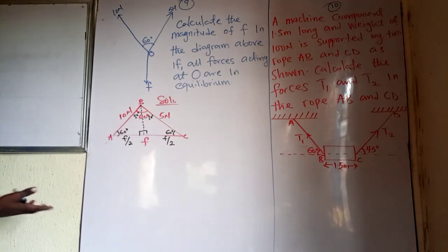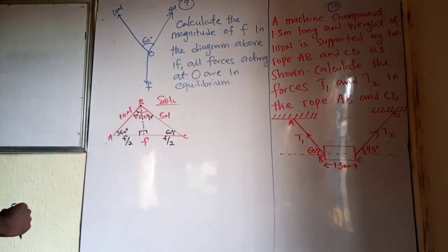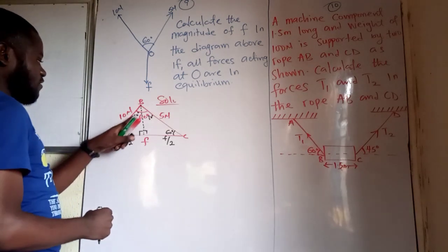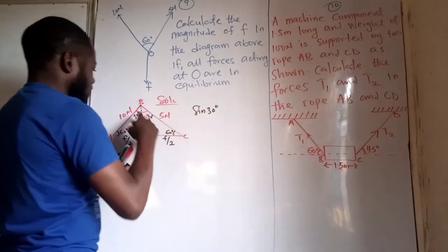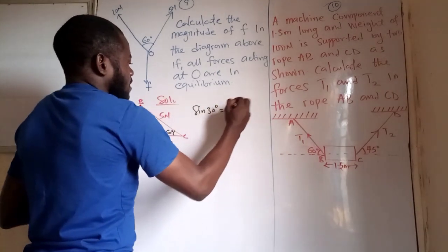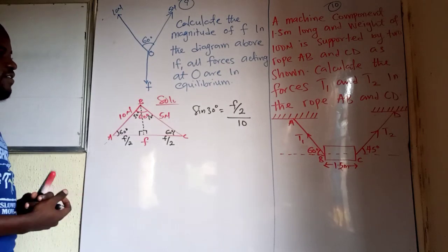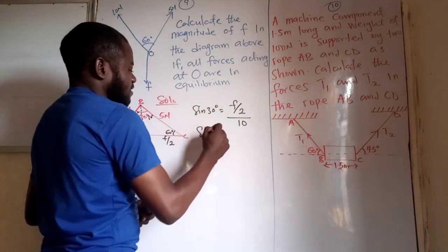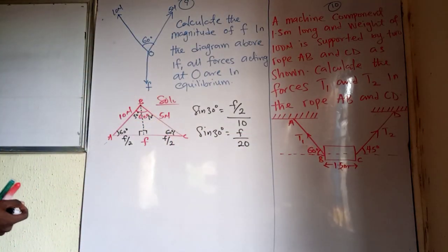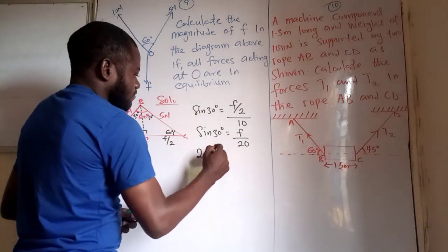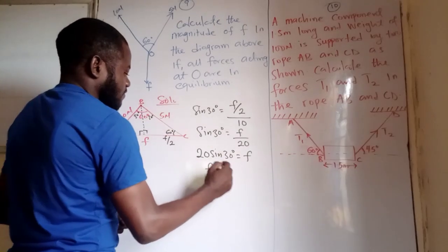I can consider the right-angle triangle here. I can see this is going to be the opposite side. By trig ratio, sine of 30 degrees equals the opposite, which is F over 2, divided by 10. So sine 30 degrees equals F over 20.